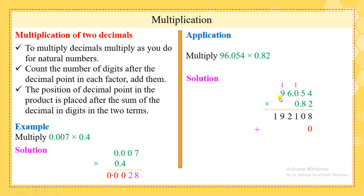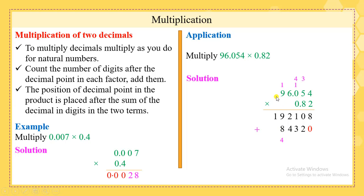8 multiplied by all the digits above it: 8 times 4 is 32 — put 2 here and 3 above the 5; 8 times 5 is 40, plus 3 is 43 — put 3 here and 4 above the 0; 8 times 0 is 0, plus 4 is 4; 8 times 6 is 48 — put 8 here and 4 above the 9; 8 times 9 is 72, plus 4 is 76.